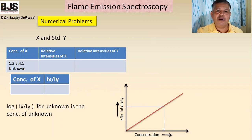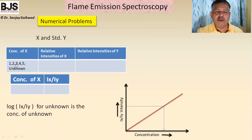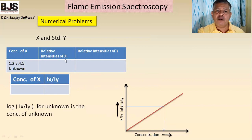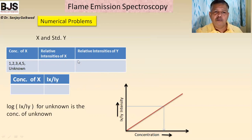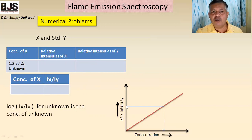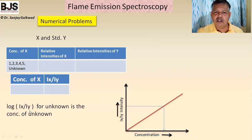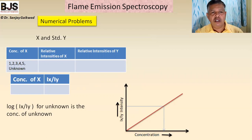For numerical problems, standard solutions (one through five) and an unknown solution are prepared. The relative intensities Ix and Iy are measured. From the ratio Ix/Iy we can find the concentration of x. By taking the ratio of the unknown intensity Ix/Iy for the unknown, and using logarithms if necessary, the unknown concentration can be calculated. This is how problems related to FES are solved.